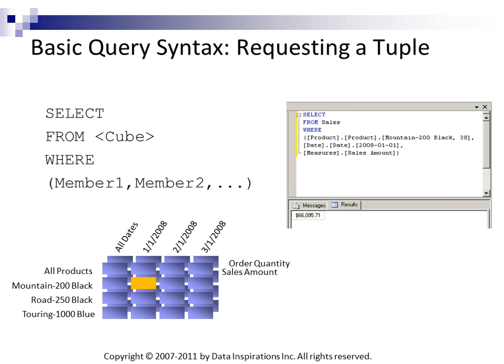When we start with the WHERE clause, notice here in this very simple intro to MDX cube, we have a tuple that's got products, dates, and a single measure. When we create tuples, they can only contain one member per dimension hierarchy. This is a very simple cube, so we just have the three items.